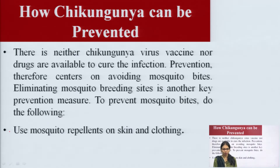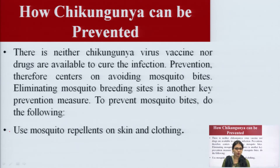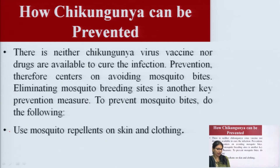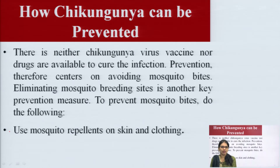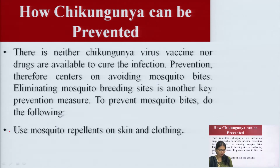To prevent mosquito bites: use mosquito repellents on skin and clothing; eliminate mosquito breeding sites; control mosquito populations by limiting their habitat; use insecticides and insect repellents; wear bite-proof jackets, long sleeves, and long pants; and secure screens on windows and close doors. There is no specific antiviral drug and no commercial vaccine available to date.